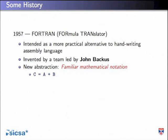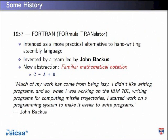Moving higher level still, we get to Fortran — familiar mathematical notation, getting closer to programming languages we know and love. It was invented by a team led by John Backus, who later won the Turing Award and gave a lecture about liberating programming from the von Neumann style, waxing lyrical about functional programming. He also said, 'Much of my work has come from being lazy — I didn't like writing programs, so I started working on a programming system to make it easier.' That's what we're doing all the time: making it easier to write programs for your actual domain.